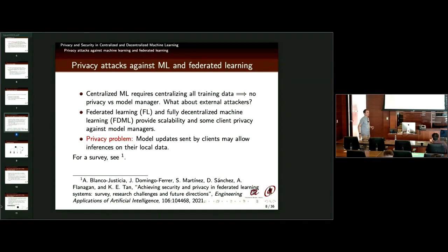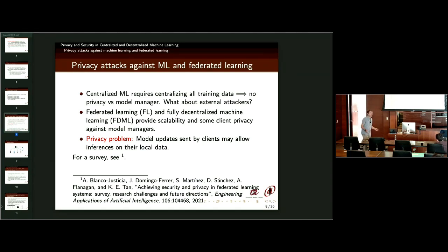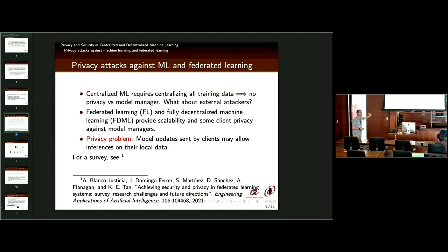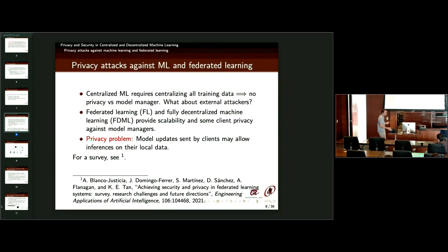Traditional models like decision trees or random forests are simple enough not to memorize training data accurately. But with deep learning, the model updates sent by clients can leak local training data. In federated learning, clients send updates to the model manager based on their local data, and those updates can reveal the local training data. There is a survey we published on that, and I will leave the presentation for Roberto to distribute.